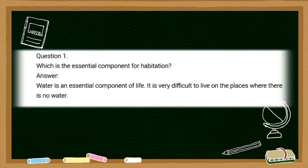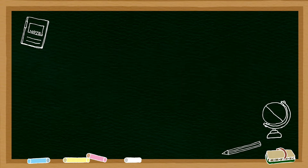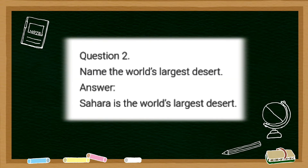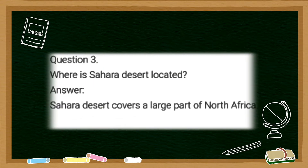The first question is: which is the essential component of habitation? The answer is water is an essential component of life. It is very difficult to live in places where there is no water. The second question is: name the world's largest desert. The answer is Sahara is the world's largest desert. The third question is: where is Sahara desert located?